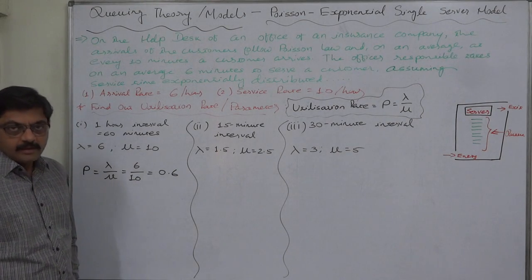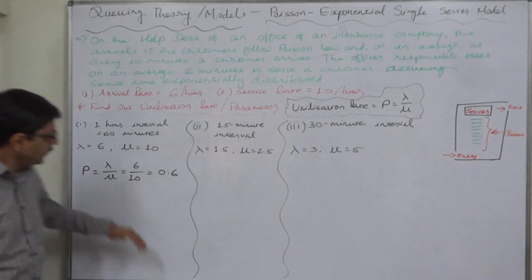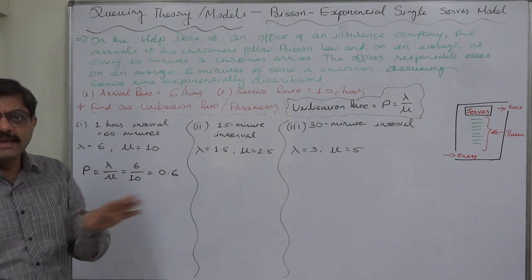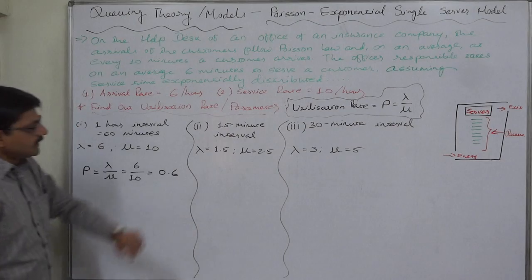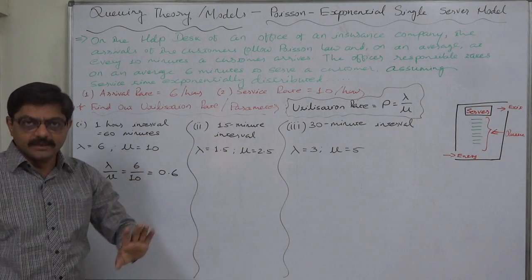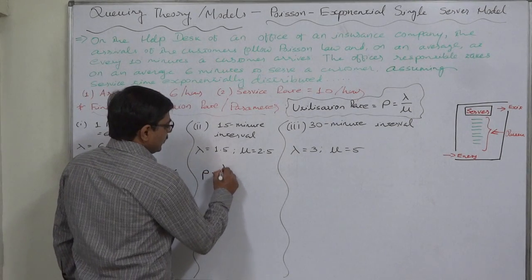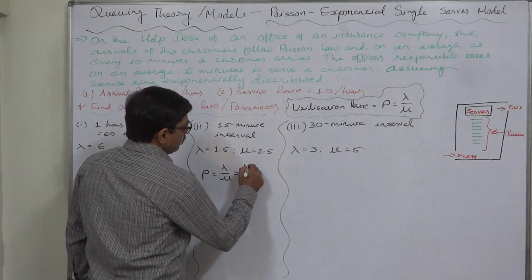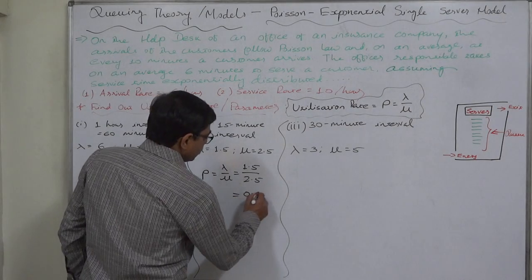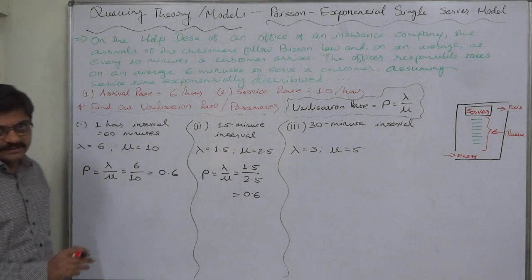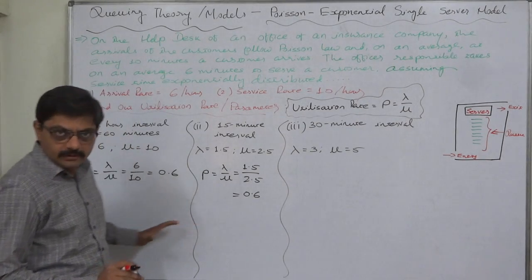Let us calculate the utilization rate considering the time unit of 15 minutes instead of 1 hour. Now what will happen? Rho will be lambda by mu, equals to 1.5 divided by 2.5. What is it again? It is 0.6. So the magnitude of capacity utilization remains the same even if the time unit under consideration for study is changed, whether it is taken as a higher unit of time or lower unit of time.